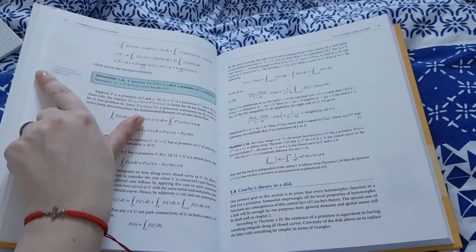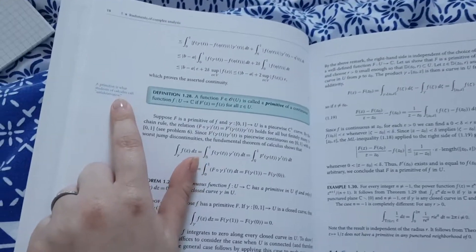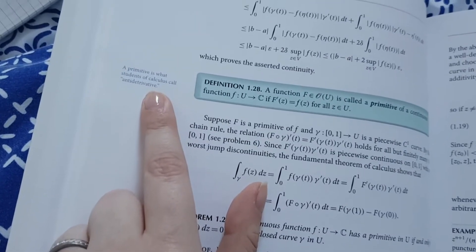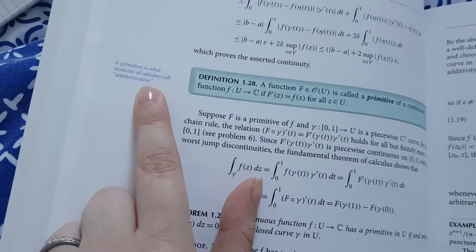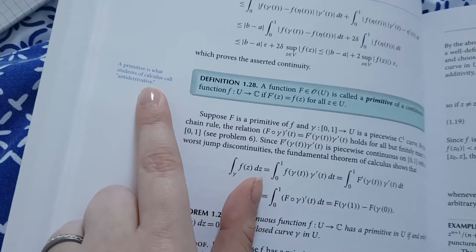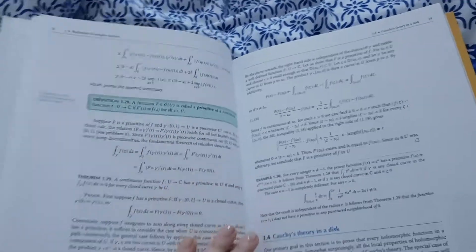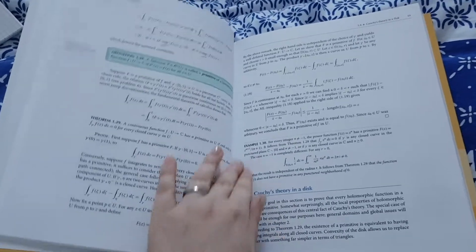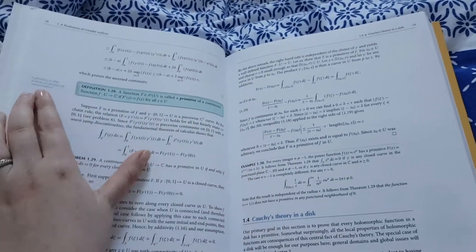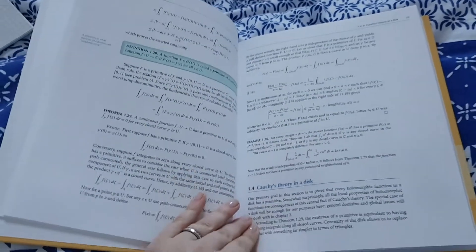So another bit of extra information here. And this one is not actually historical. So it says a primitive is what students of calculus call anti-derivative. And I thought, oh, that gives me some extra things and extra context. And like, I actually used to call it like that, never called it a primitive.